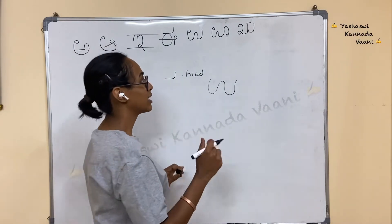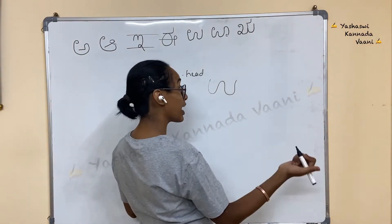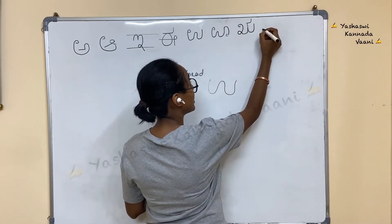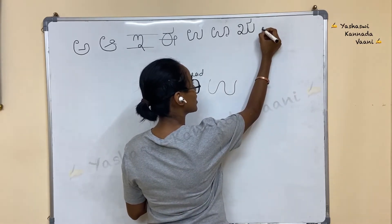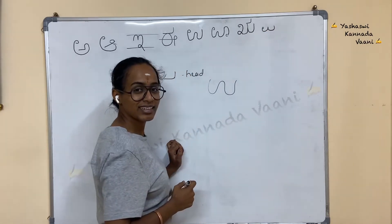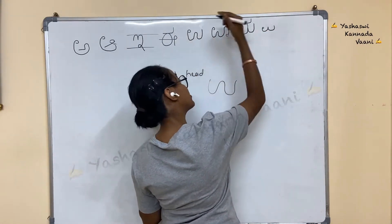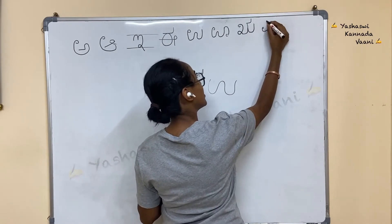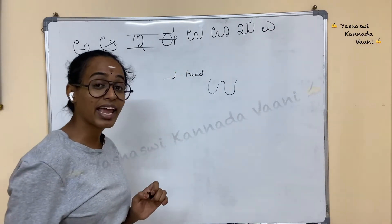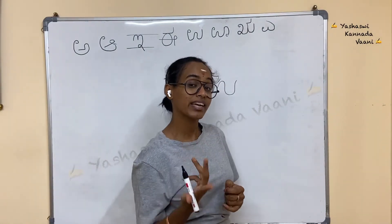Clear? Very good. Next is A (ಎ). For A (ಎ), we will start from the bottom. Start with a small circle and it is like a sleeping letter 3. Then go to the left side. This is your A (ಎ). La — La is a leaf. Le — Le is a bear.